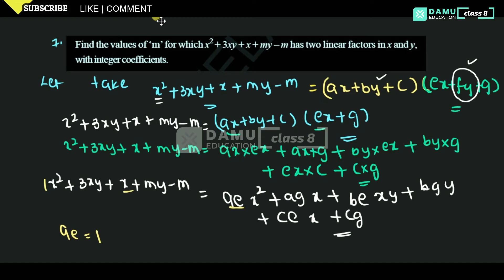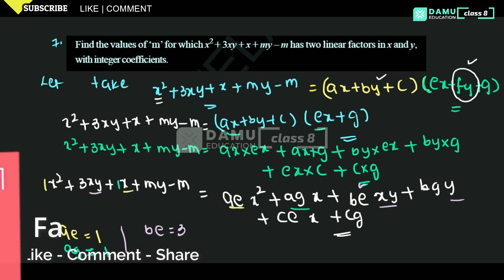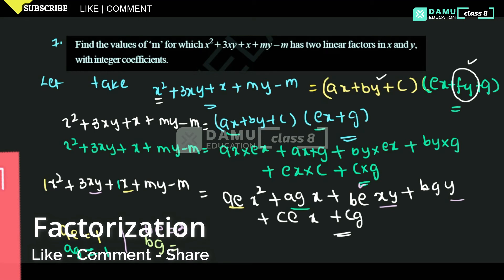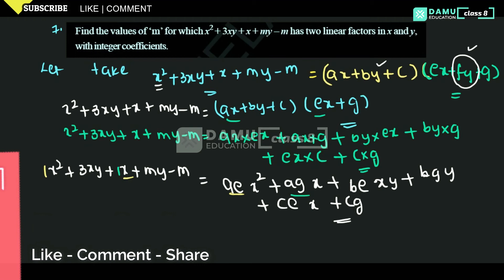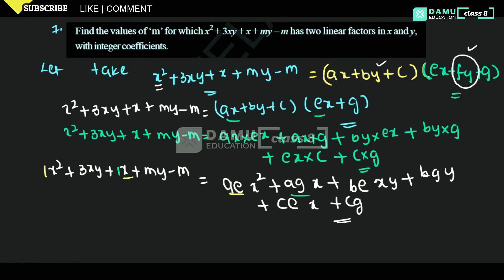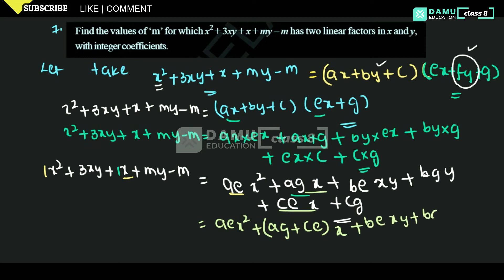For the x term, ag plus ce equals 1. For the xy term, be equals 3. For the y term, bg equals m. And the constant term ce... Let's rewrite the full expansion as ae·x² plus (ag + ce)·x plus be·xy plus bg·y plus cg.